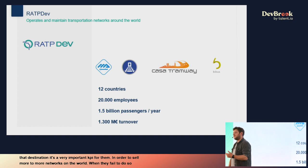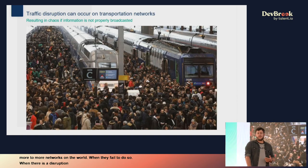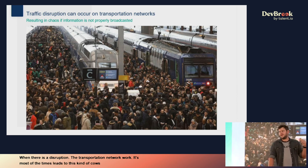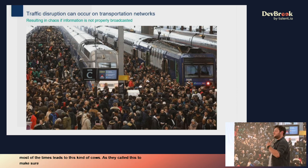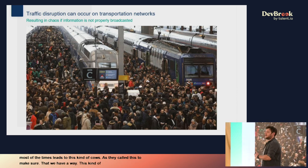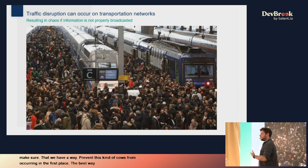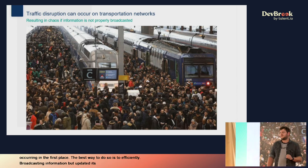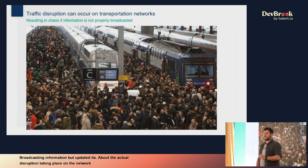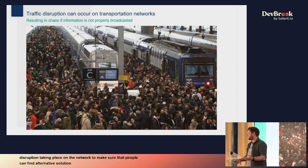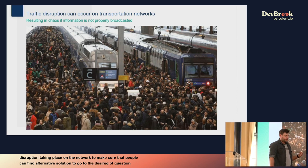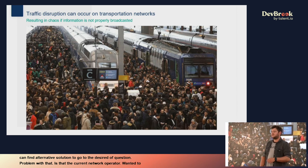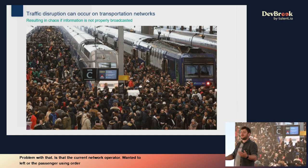When they fail to do so, when there is a disruption in the transportation network, it most of the time leads to chaos. They called us to make sure we have a way to prevent this kind of chaos. The best way to do so is to efficiently broadcast information about updated itineraries and the actual disruption taking place on the network, so that people can find alternative solutions.